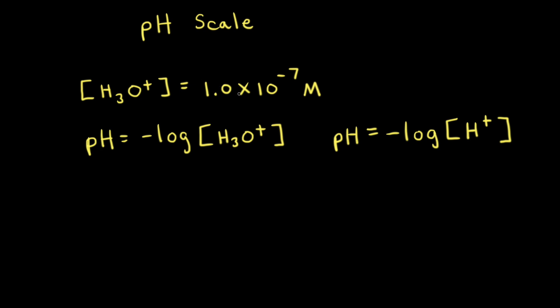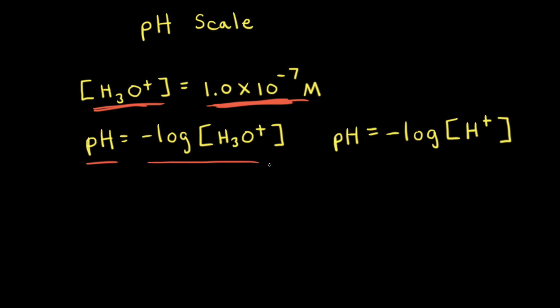For a sample of pure water at 25 degrees Celsius, the concentration of hydronium ion is equal to 1.0 times 10 to the negative seventh molar. Because the concentrations are often very small, it's much more convenient to express the concentration of hydronium ion in terms of pH. And pH is defined as the negative log of the concentration of hydronium ion.